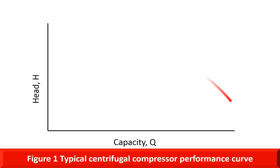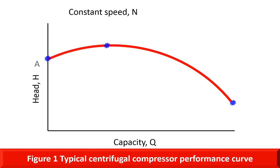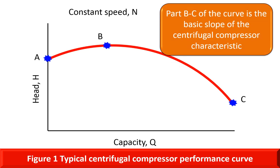This figure illustrates the typical characteristic curve of a centrifugal compressor. There are three points A, B, and C marked on the curve. The part B to C of the curve is the basic slope of the centrifugal compressor. In this part of the curve, as inlet flow decreases, the head developed increases. The steepness of the slope is dependent on the impeller design. The more the impeller blades lean backward from the true radial position, the steeper the curve.